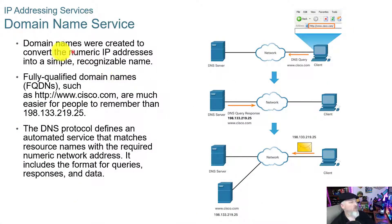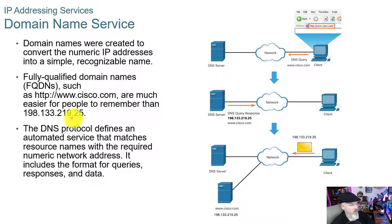Domain names were created to convert numeric IP addresses into simple recognizable names like cisco.com. Fully qualified domain names — FQDNs — such as http://www.cisco.com are much easier for people to remember than 198.132.219.25. Think about it the same way you remember phone numbers — with smartphones you can just say 'call Joe Smith in New York' and you don't need to know the number; the system converts it for you. That's what DNS does — it defines an automated service that matches resource names with the required numeric network address.